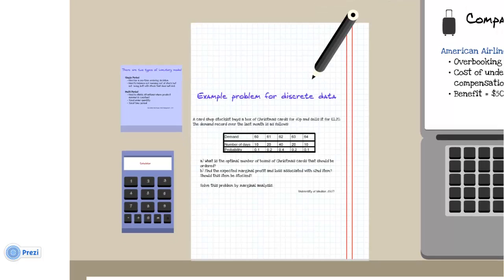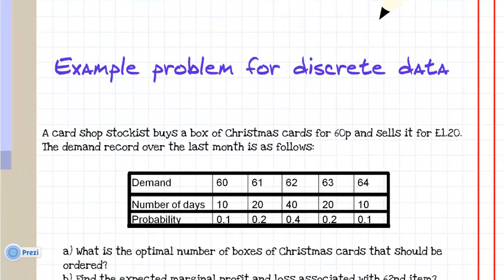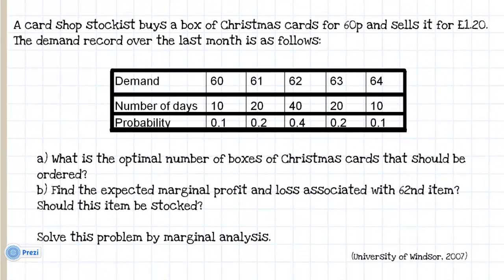Moving on to an example problem that you may see in a textbook that requires using the single period inventory model. This problem is for discrete data. There are other problems for uniform or normal distribution but discrete data is what we'll be focusing on today. A card shop stockist buys a box of Christmas cards for 60p and sells it for £1.20. The demand record over the last month is as follows. You are then given a table showing the amount of cards that were bought on how many days and the consequent probability resulting from this. At least 60 boxes of cards were bought on 10 days of the month, so the probability of this is 0.1, and so forth.